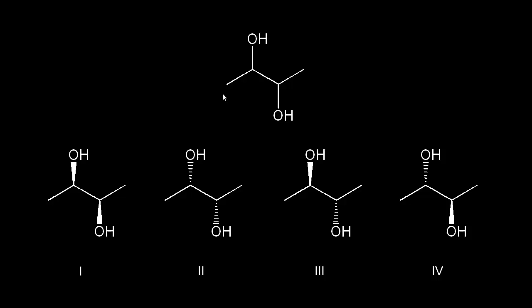Let's do another example — this one's a little bit harder than the last one. We have two chiral centers, so we would expect two to the second stereoisomers, which is four. I'll put a question mark here again, because we're not sure if we actually will get four stereoisomers — that's a maximum number. Down here I have the four possibilities already drawn out to save some time: one, two, three, and four.